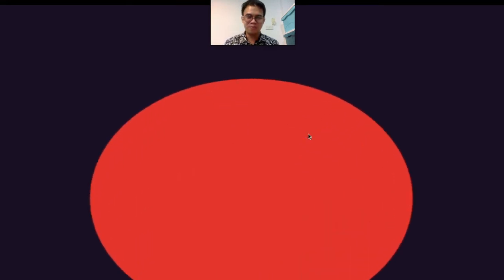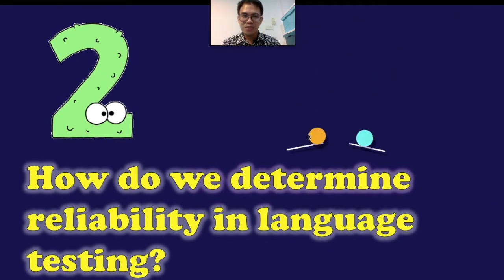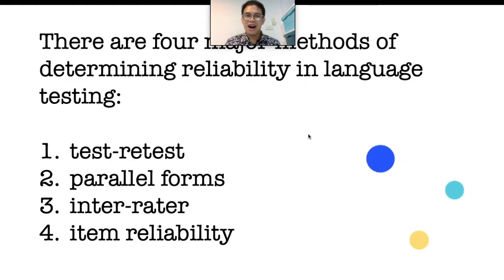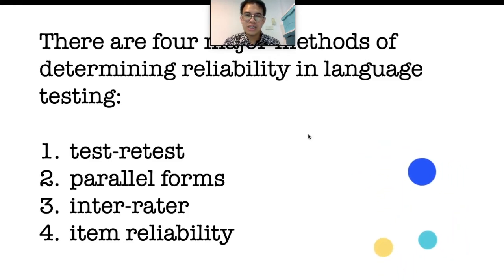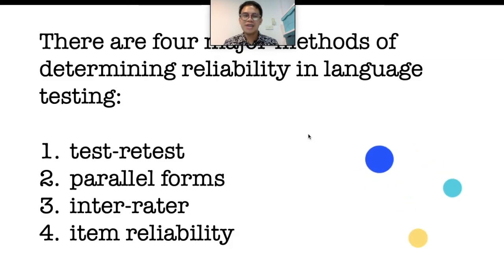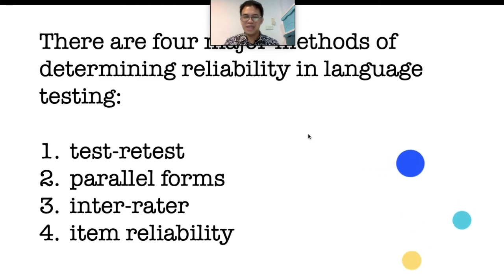Now, let's proceed to our second question: How do we determine reliability in language testing? How do we find out if a test is reliable or not reliable? There are four major methods of determining reliability in language testing. The first one is test-retest. The second one is parallel forms. The third one is inter-rater. And the fourth one is item reliability.